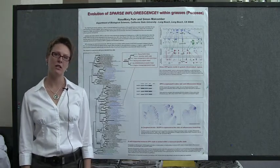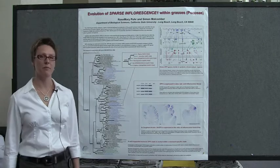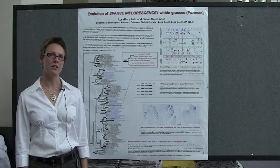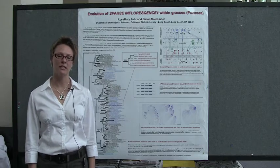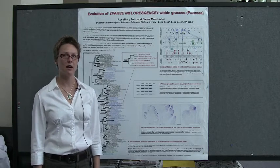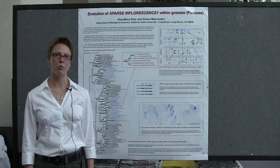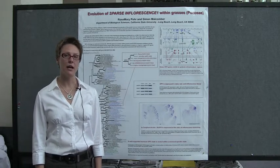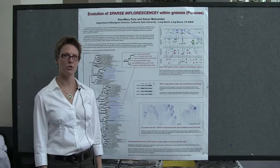The gene that I'm interested in is called sparse inflorescence 1, or SPI1. SPI1 is a yucca gene, and yucca genes catalyze the production of auxin in plants. In Arabidopsis, yuccas play redundant roles, meaning you have to knock out more than one before you see a phenotype. And in grasses, yuccas tend to play non-redundant roles.